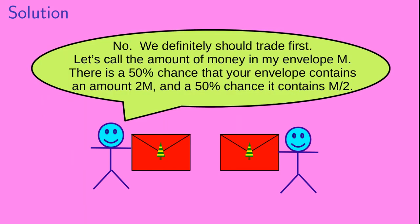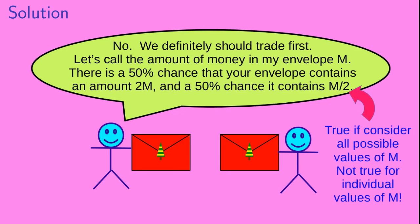But where did your sibling's logic go wrong? Let's look back at what your sibling said. They called the amount of money in their envelope m, and then said there is a 50% chance that your envelope contains 2m and a 50% chance it contains m over 2. These statements are correct if you look at all possible values of m, but it's not true for an individual value of m.